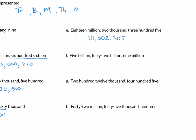Example f: five trillion, forty-two billion, nine million. Five gives us 5, comma. For forty-two billion: no 'hundred' so zero in the left, then 4-2, giving 0-4-2, comma. Nine million: nine goes in the right column — zero, zero, nine, comma. Thousands are not mentioned so we add three zeros, comma. The ones period is also not mentioned so we add three more zeros. The full number is 5,042,009,000,000.